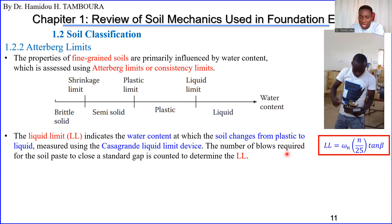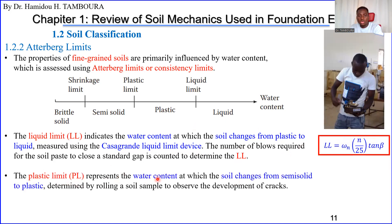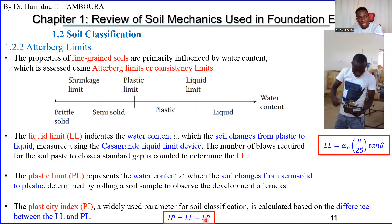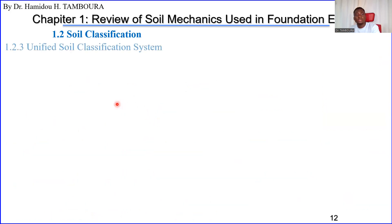Again, details are in the soil mechanics class. The plastic limit is also a water content — it is the point at which the soil changes from semi-solid to plastic state. The plasticity index PI is obtained from the liquid limit minus the plastic limit. Note that IP is the French notation and PL is used in French as well, but all details are in the soil mechanics class.